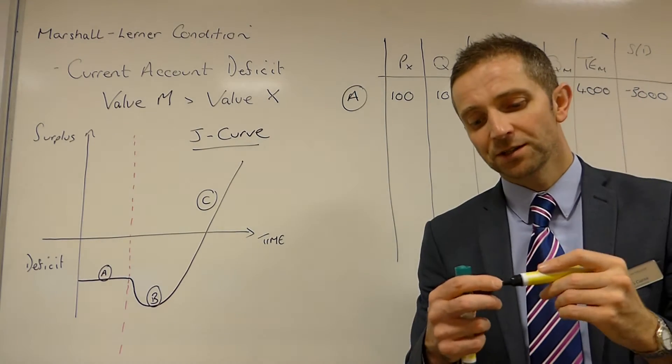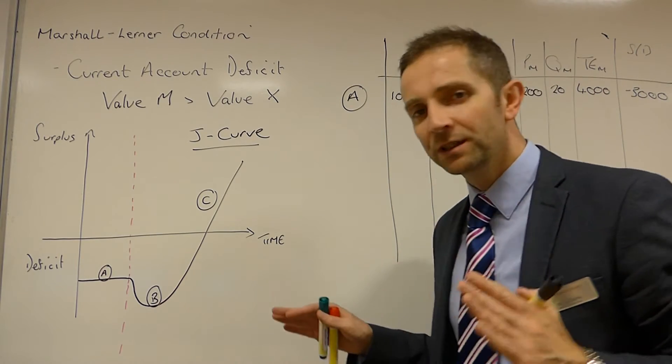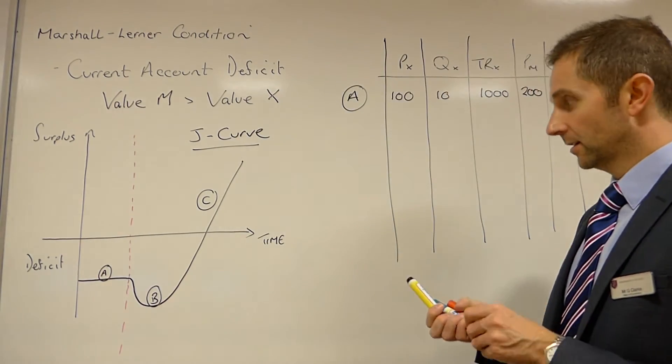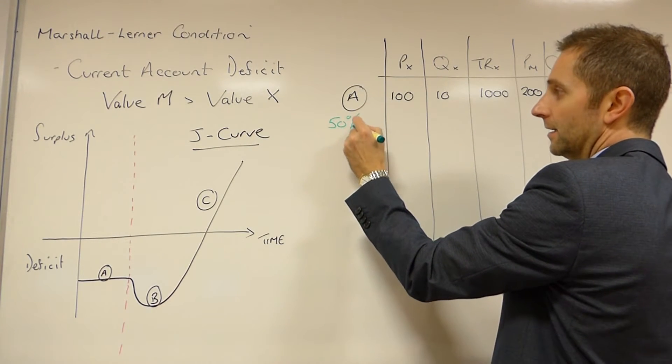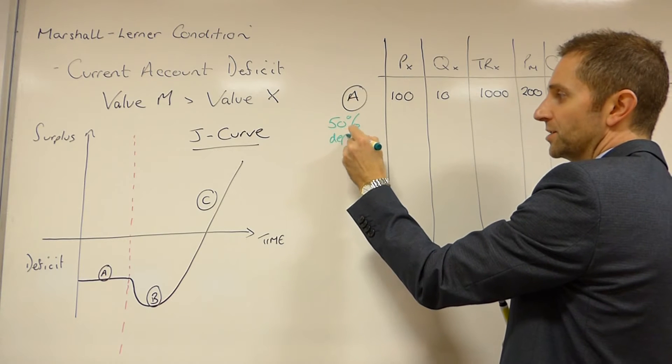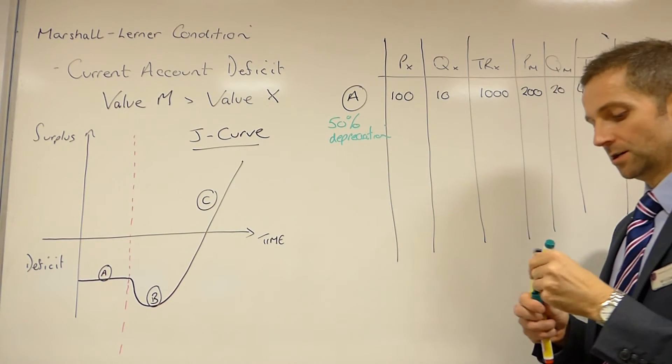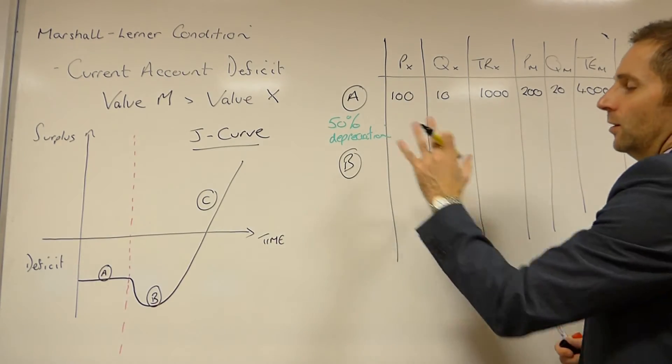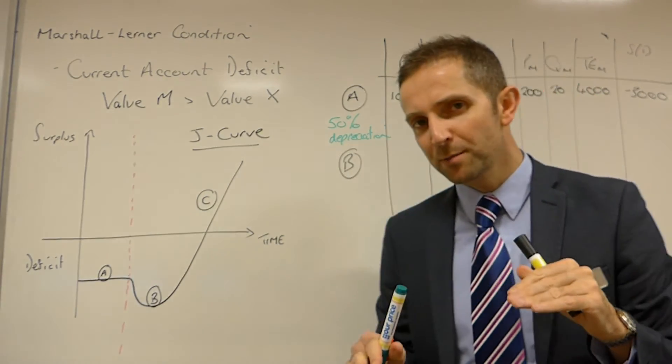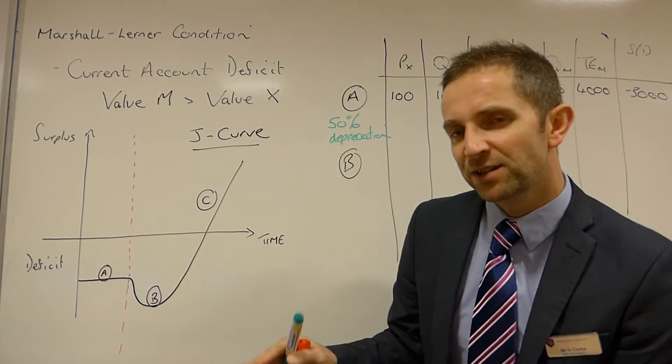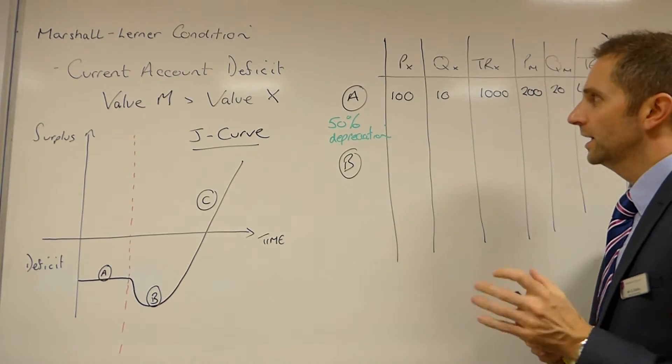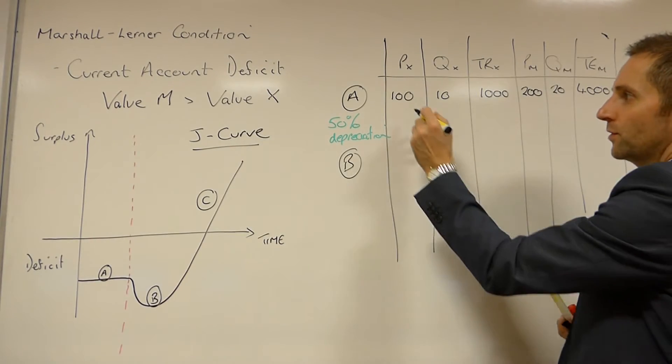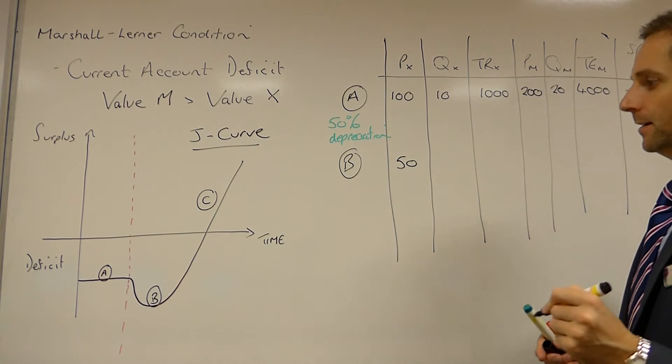And it's at this point that the government or the central bank decides, right, we are going to do something about this deficit position. So they engineer this depreciation. So I'm going to say that at this point then, we engineer a 50% depreciation in the currency. So think about what will happen to prices when you engineer this depreciation in the currency. Remember, as I keep telling my students, the best way to remember this is if the currency depreciates, the price of the export always follows in the same direction. So if you get a depreciation of 50%, that means your export prices will be 50% cheaper. So they then move from £100 per unit to £50.